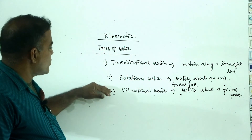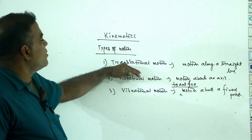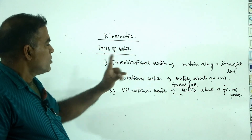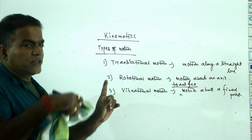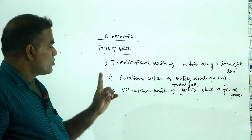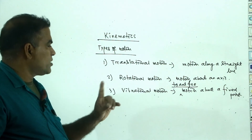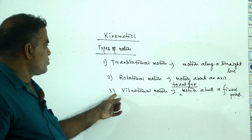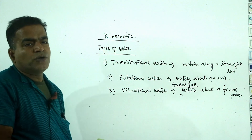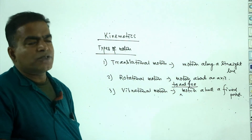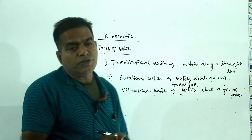So to summarize: a body in translational motion moves along a line, rotational motion is about an axis, and vibrational motion is about a fixed point. In the next class, we will go through translational motion in detail.